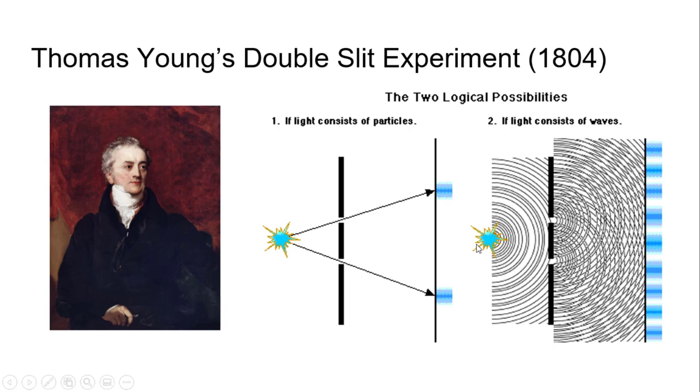You get something called interference where the waves are going to either get bigger in signal or get smaller in signal—that's destructive interference—and that's why you would get this banding pattern where it's either light or dark.